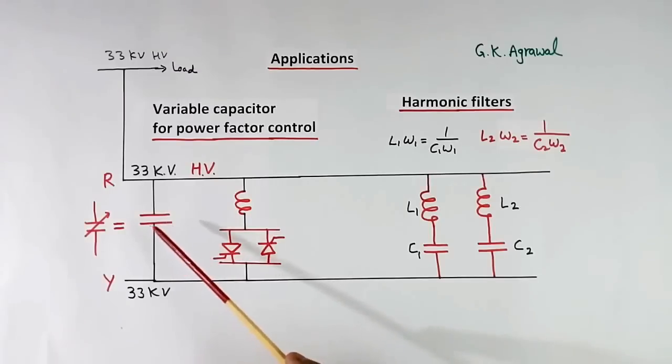So what we do, we put one fixed capacitor and an inductor in parallel to this. And current in the inductor is controlled by thyristor, anti-parallel thyristor.